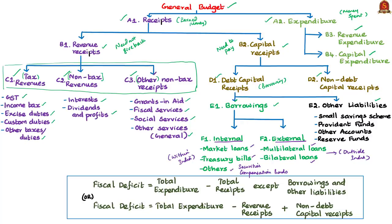Liabilities under debt capital receipts refers to the government's responsibility to pay money collected from citizens or organizations in the form of small savings schemes, provident funds, other accounts and reserve funds — when citizens or organizations want their money back. Non-debt capital receipts refers to the amount received by the government by disposing of or selling its assets, which is called the disinvestment process of the government.